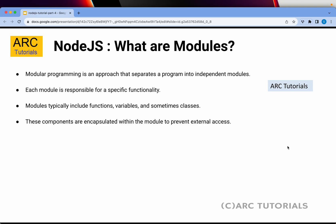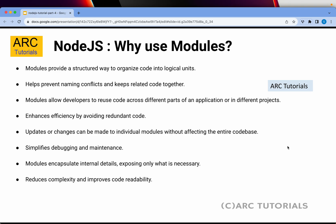Modules can include functions, variables, and classes. Why use modules? Modules provide a structured way to organize code — it helps in preventing naming conflicts and keeping related code together. When you work in a large distributed team, each team member can work on different modules, and when you put all those modules together, it becomes your one big application. Since modules are smaller units, they are easy to maintain, debug, and extend, and they reduce the entire complexity of the application while improving code readability.